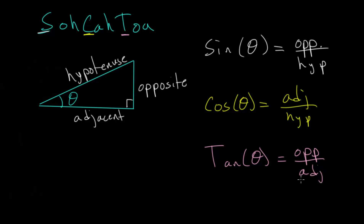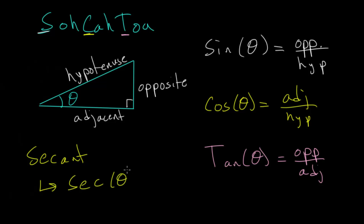Our three new trig functions are going to be the reciprocals of these — essentially, we're just going to flip each of these fractions and come up with three new functions. Let's start with what we call the secant, written as SEC of our angle theta. The secant is going to be the reciprocal of the cosine function, so one way to write it is as one over the cosine of our angle.